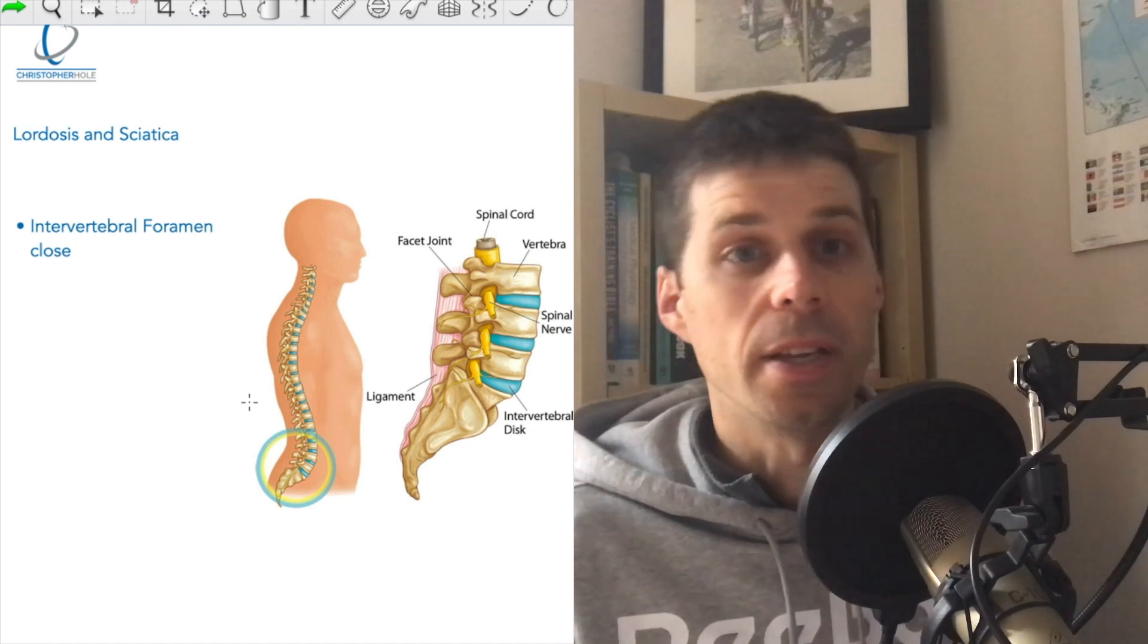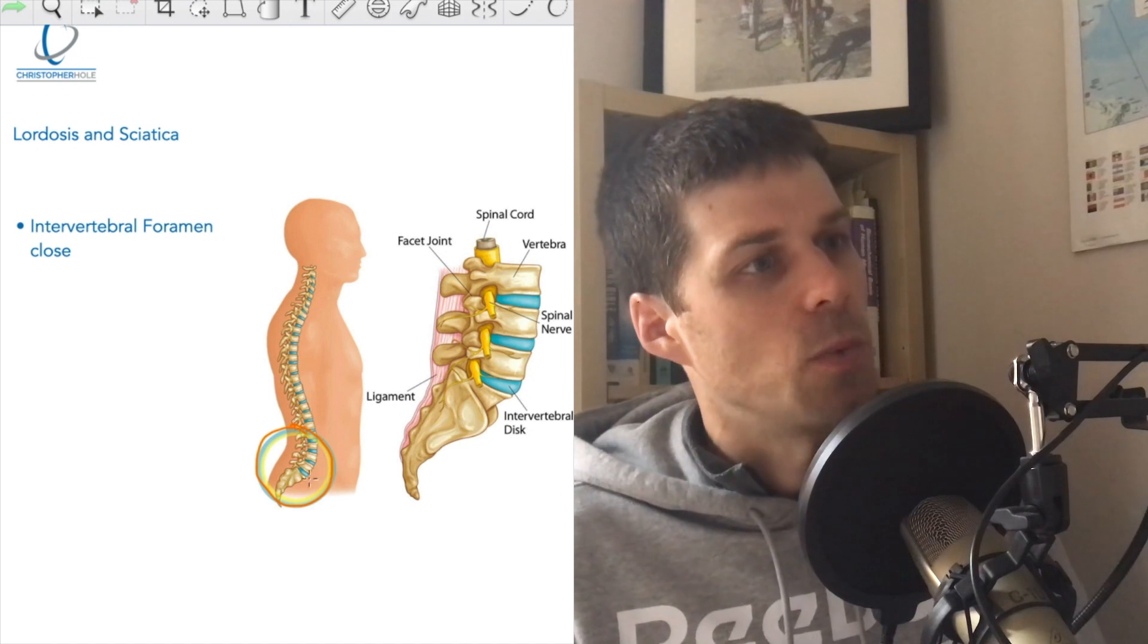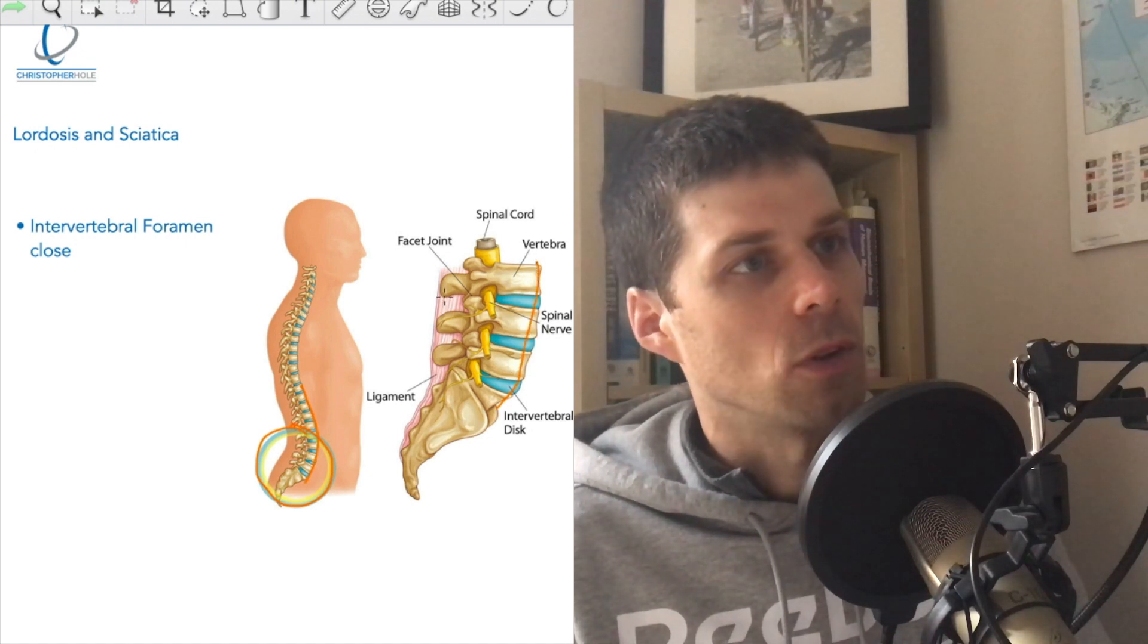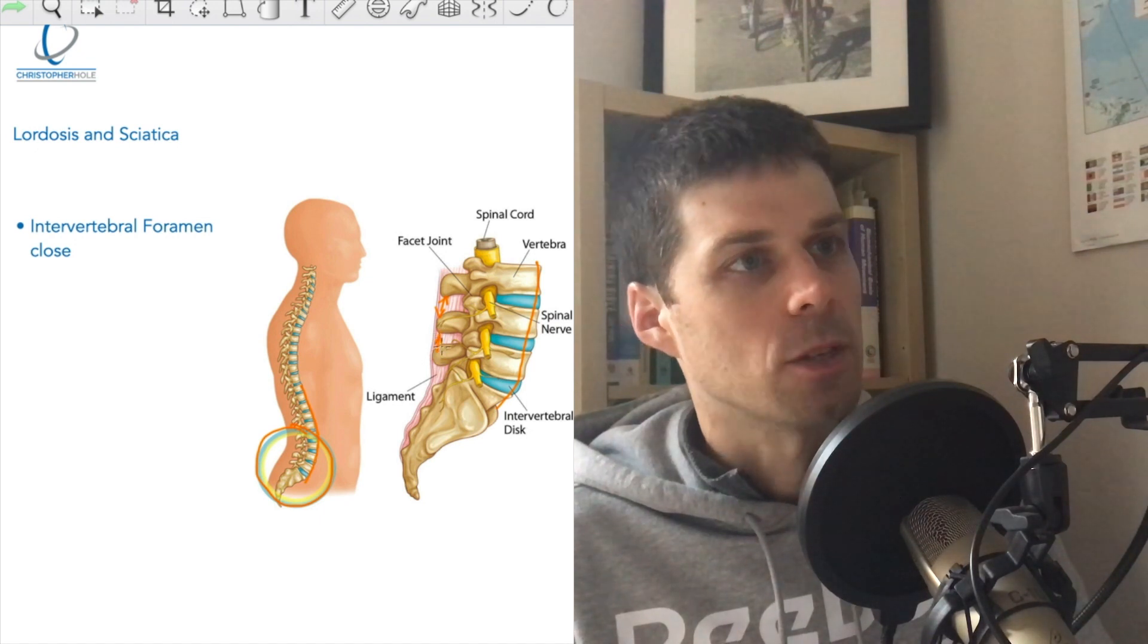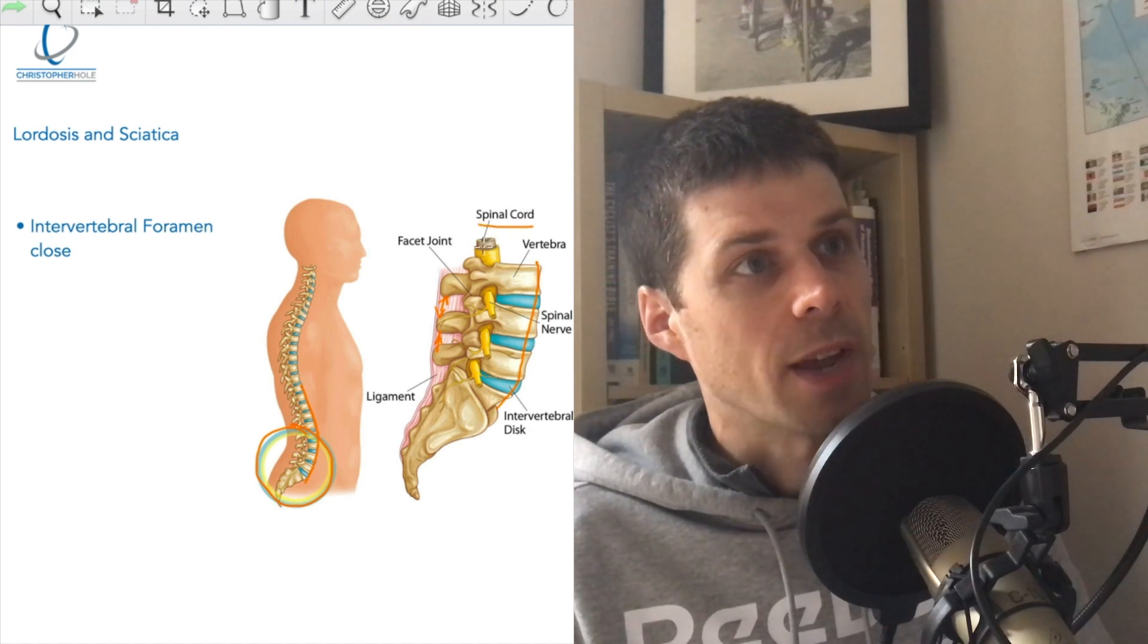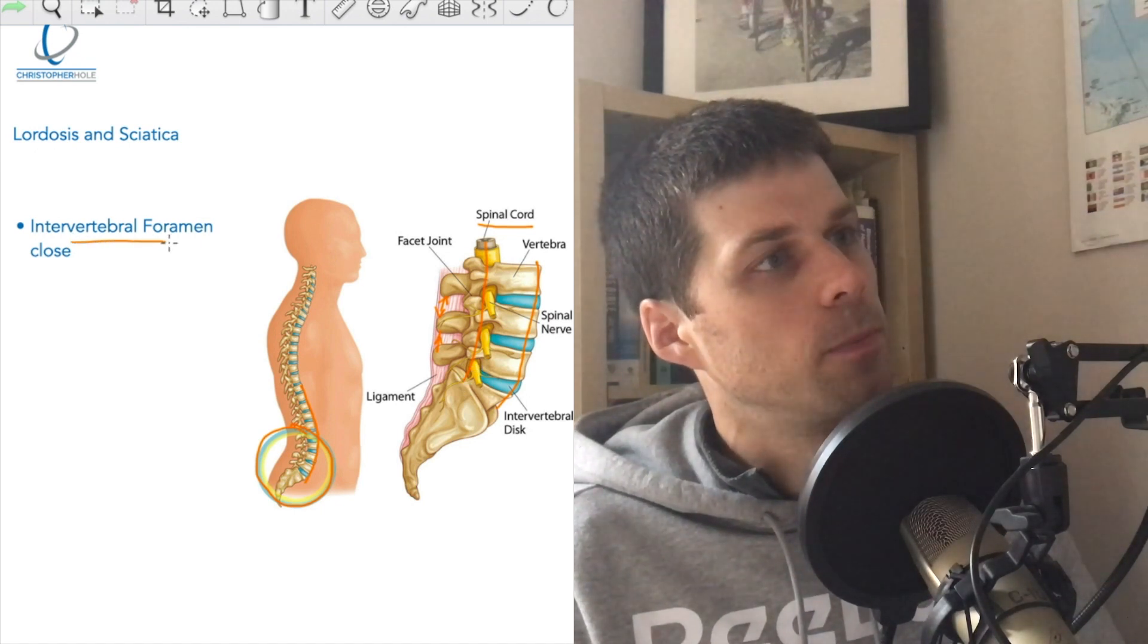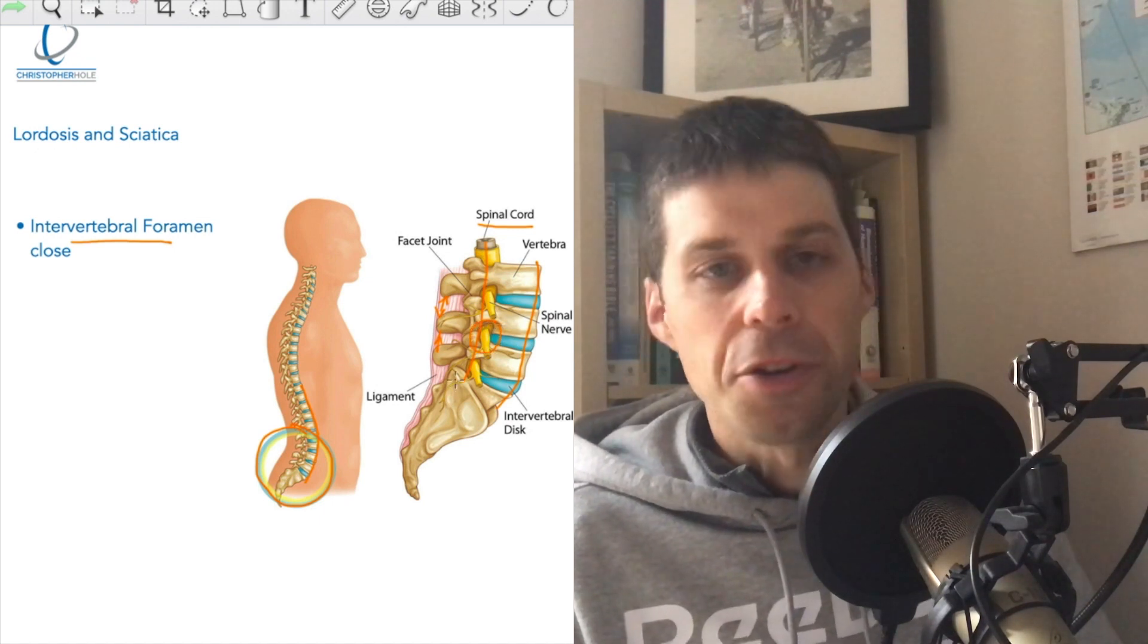Now we've magnified the lumbar spine. You can see here this is where we've magnified, so this is now a normal curve. You can see you've got space between these spinous processes. But the important bit: you've got the spinal cord which goes down through the center of the spine, and then what you have are these intervertebral foramen—basically the spaces where the nerve roots come out.